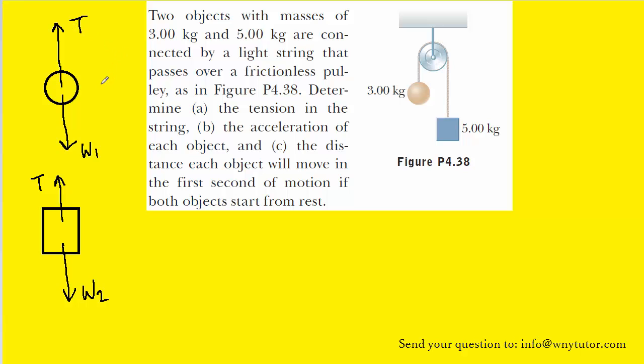In fact, the free body diagrams for both objects are quite similar. In both cases, because each object is attached to the rope, there is a tension force applied to each object that points upward. So we have the tension force on the circular object and then the tension force on the squarish shaped object.